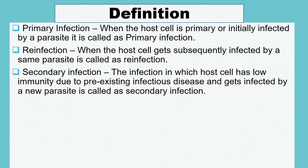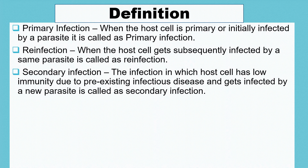Third is secondary infection. The infection in which the host cell has low immunity due to a pre-existing infectious disease and gets infected by a new parasite is called secondary infection. When a host already suffering from an infection — and therefore having low immunity — gets infected again by a second or new parasite in the presence of that pre-existing infection, such infection is called secondary infection.